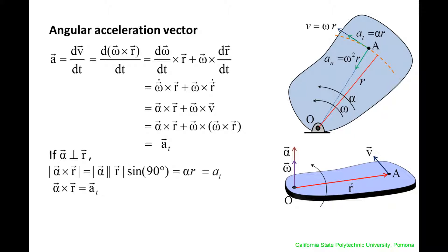The direction of alpha can be found by using the right-hand rule. Stick out your right hand in the direction of the position vector and curl your fingers in the direction of the tangential acceleration vector. Now stick out your thumb. That is the direction of the angular acceleration vector. In the image shown on the bottom right, omega and alpha are pointed in the same direction, which means that the angular velocity of the rigid body is increasing. If omega were pointed upward and alpha were pointed downward, the angular velocity of the rigid body would be decreasing. And if alpha were zero, the angular velocity would be constant.